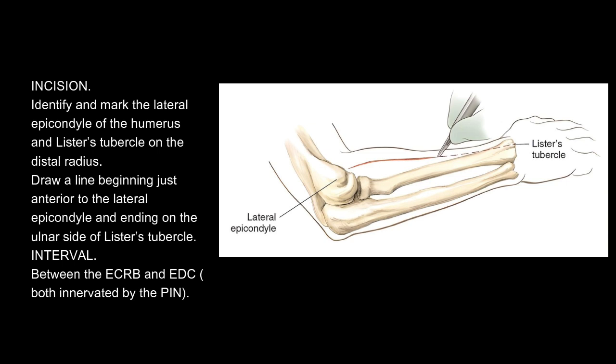Incision: Identify and mark the lateral epicondyle of the humerus and Lister's tubercle on the distal radius. Draw a line beginning just anterior to the lateral epicondyle and ending on the ulnar side of Lister's tubercle. Interval: Between the ECRB and EDC, both innervated by the PIN.